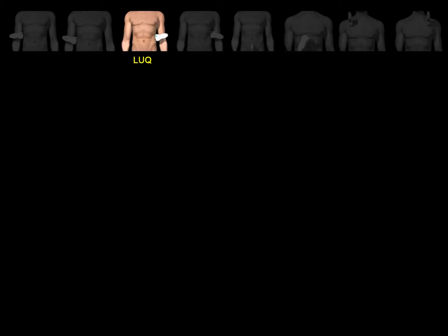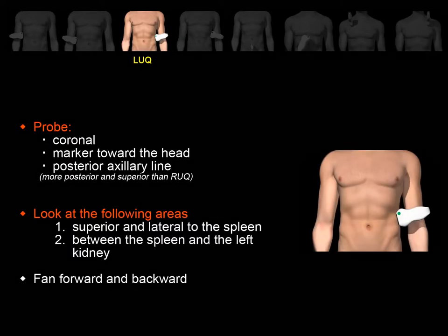The left upper quadrant view is usually more difficult to obtain than the right upper quadrant, because the spleen is a smaller acoustic window than the liver. Place the probe in the coronal orientation with the probe marker towards the patient's head in the posterior axillary line. To avoid rib shadows, slightly rotate the probe to fit in the intercostal space. Look for free fluid superior and lateral to the spleen, and also between the spleen and the left kidney. Fan through these areas anterior to posterior to evaluate the whole anatomical space.